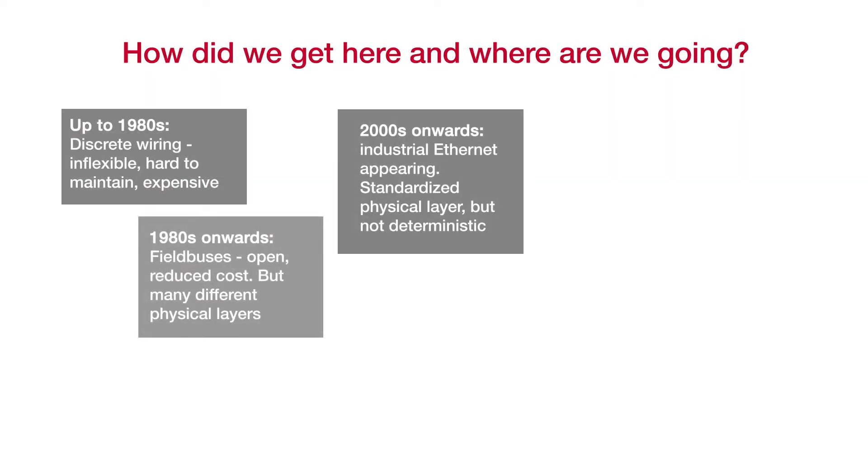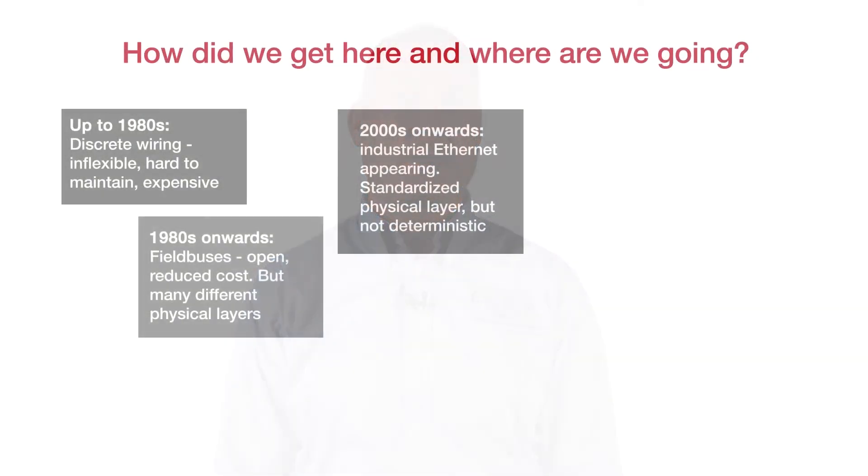In the 2000s, we started to see industrial Ethernet, which addressed the different physical layer problem. You were now starting to see different networks that could just be implemented using Ethernet. However, the big drawback at this point was that Ethernet was not deterministic. If you're running a production line with high-speed machinery, synchronization on a millisecond level starts to be very important. If we couldn't guarantee when a given event was going to occur, it meant we were still having problems.